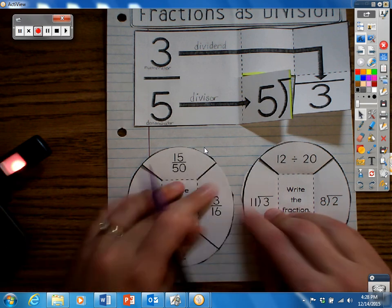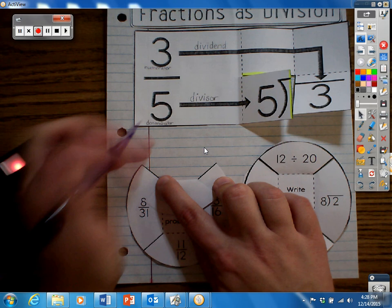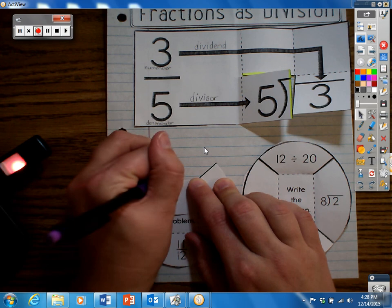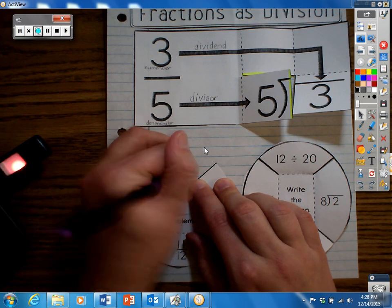And then finally 15 fiftieths. 15 on the inside, 50 on the outside. 15 divided by 50, and then in word form, 15 divided by 50.